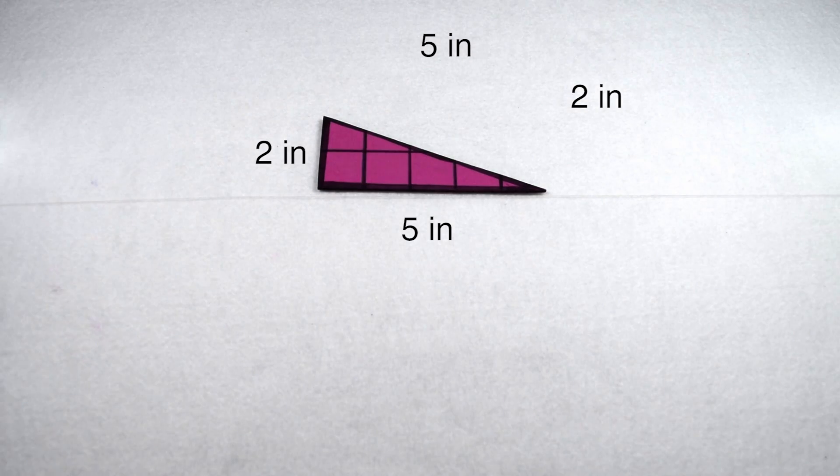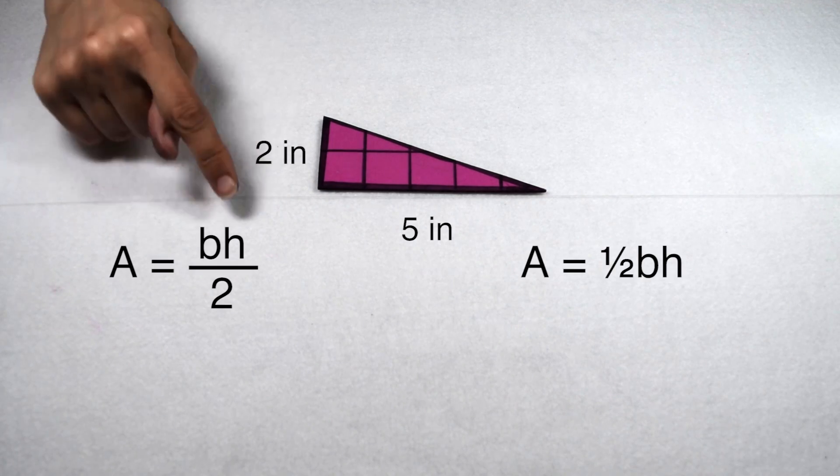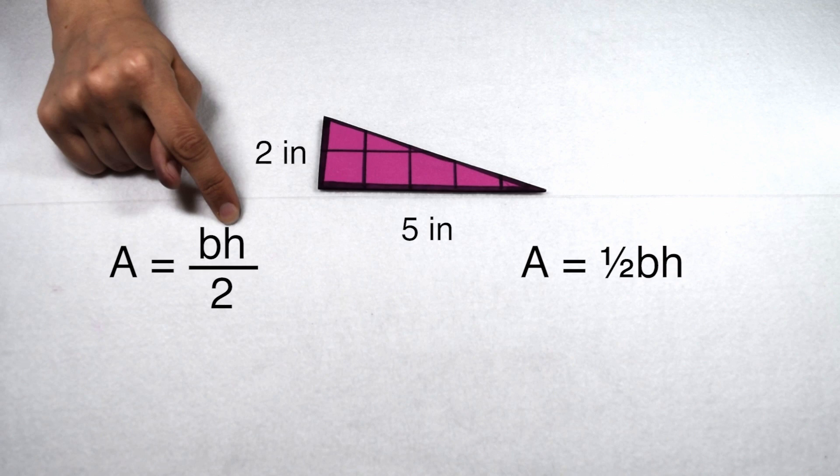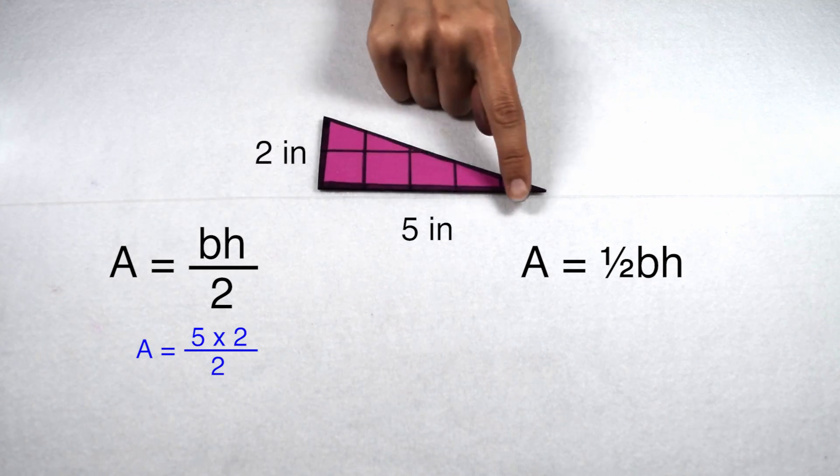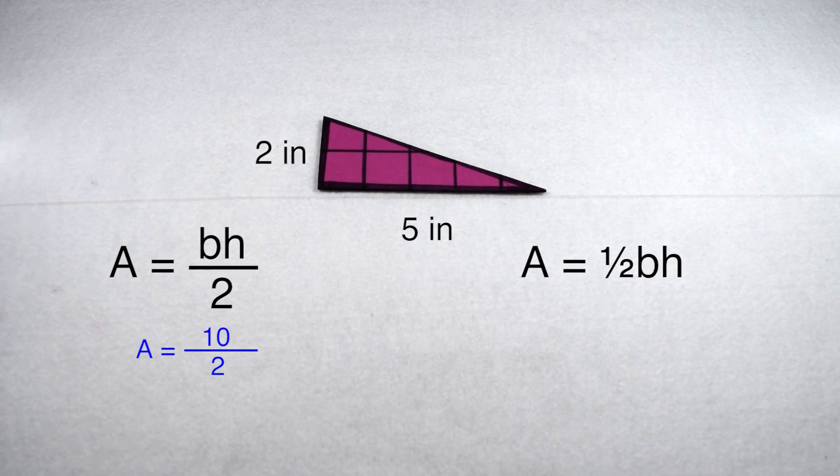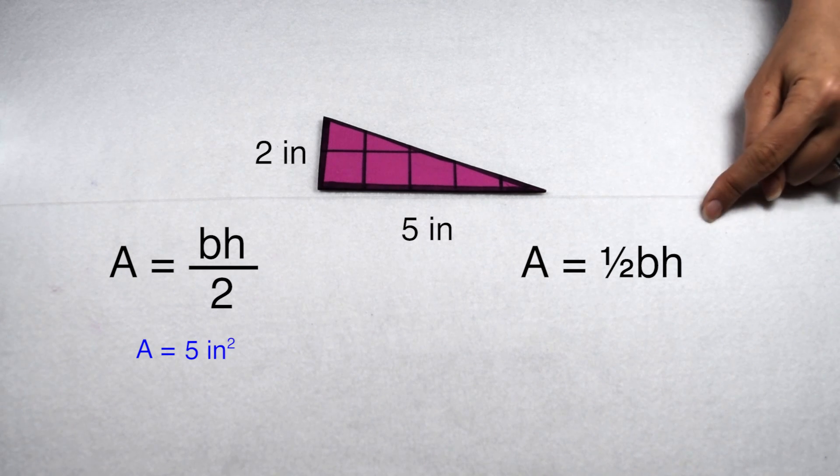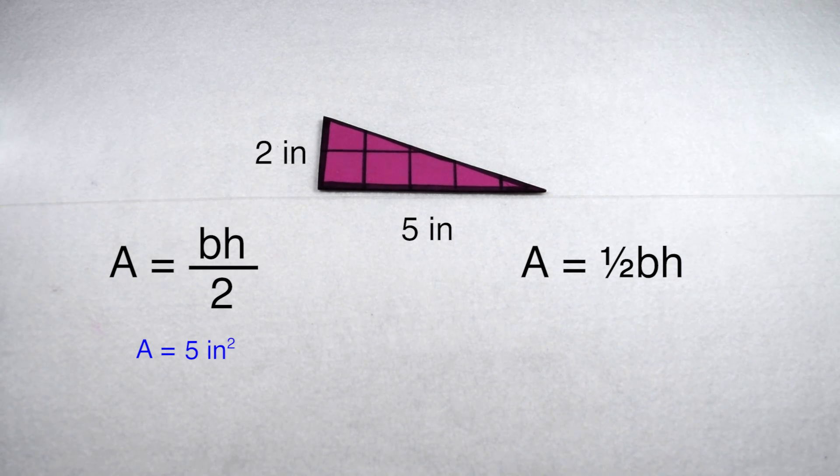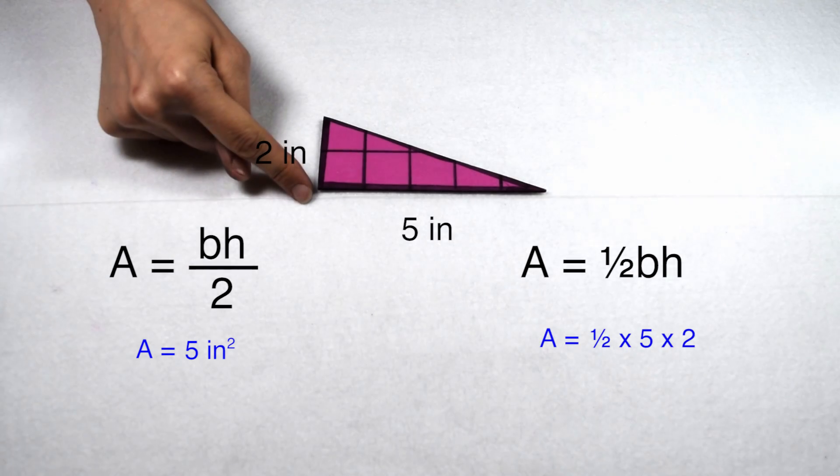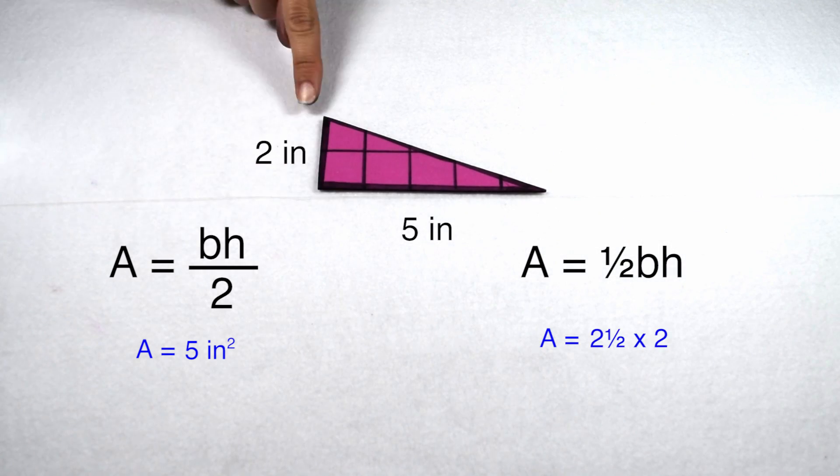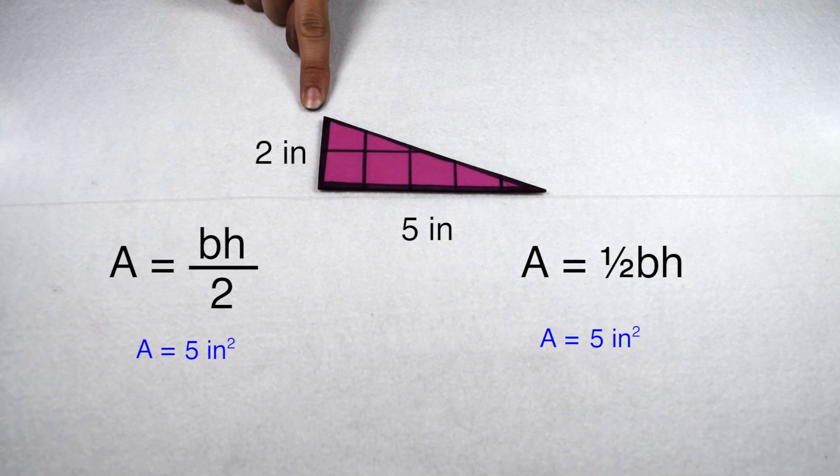We can see that fits with both of our equations. If I use A = bh/2, I can multiply 5 times 2 to get 10 square inches and then divide it by 2 to give me 5 square inches. I can also use A = ½bh. One half times 5 gives me 2 and a half, 2 and a half times 2 gives me 5, so my area would still be 5 square inches.